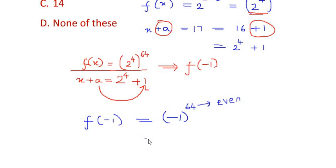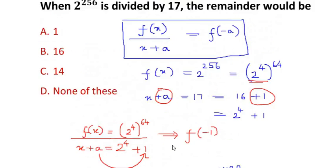So we get it as plus 1. Minus 1 to the power of 64 is plus 1. If the power was an odd number, then it would have become minus 1, but since 64 is even, it turns it into a positive number. So the remainder of the given term is 1.